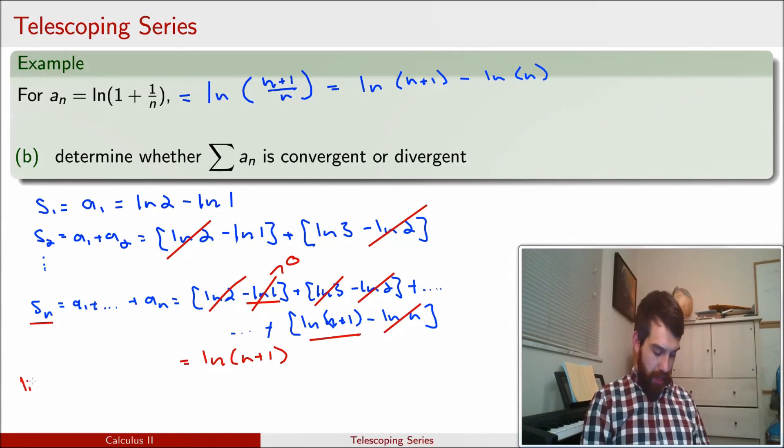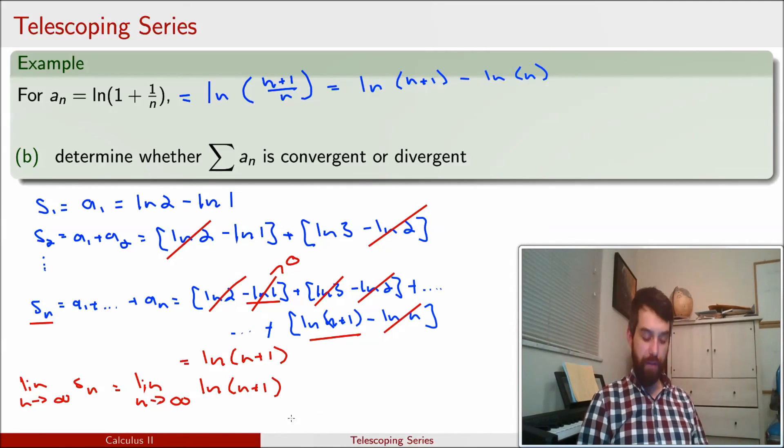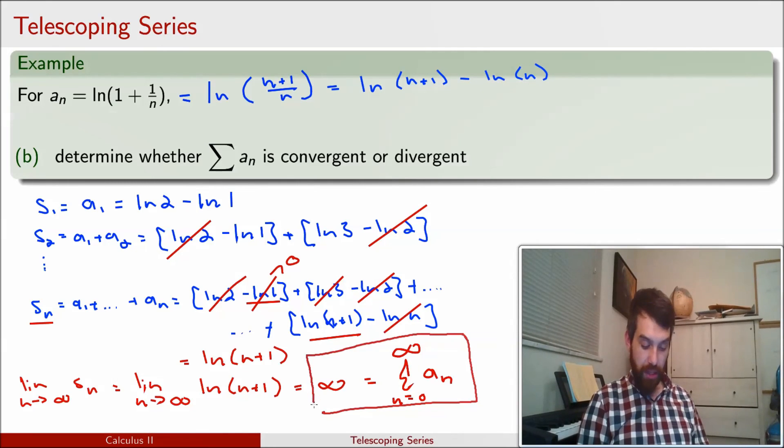And in particular, I can take the limit as n goes to infinity of this sequence of partial sums. So that's just the limit as n goes to infinity of the natural log of n plus 1. And natural log diverges for large values of n. So this thing is just going to be equal to infinity. And another way to say that is the sum of n equal to 0 to infinity of the a_n. So indeed, my series is going to be diverging to positive infinity because my sequence of partial sums is going to be diverging to infinity.